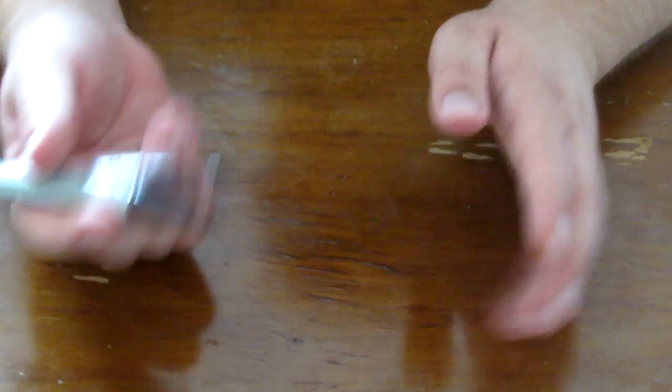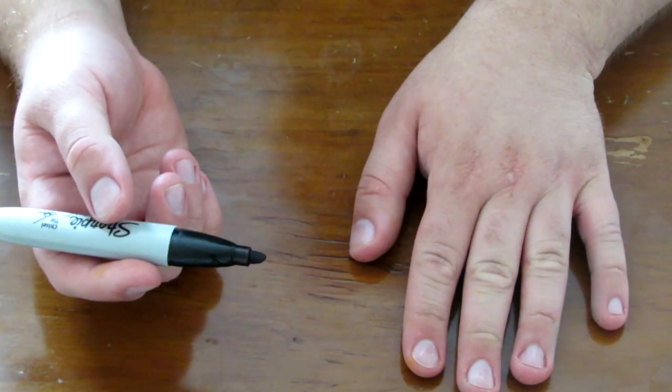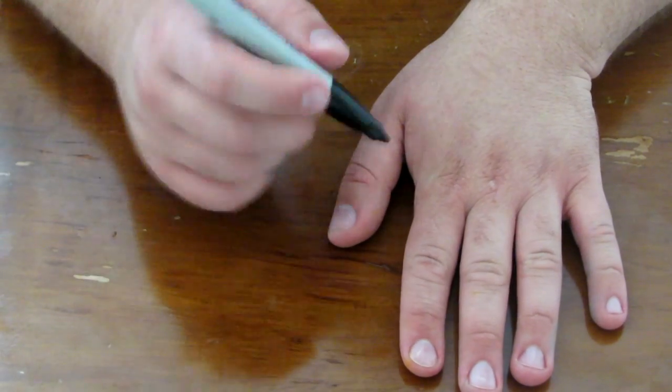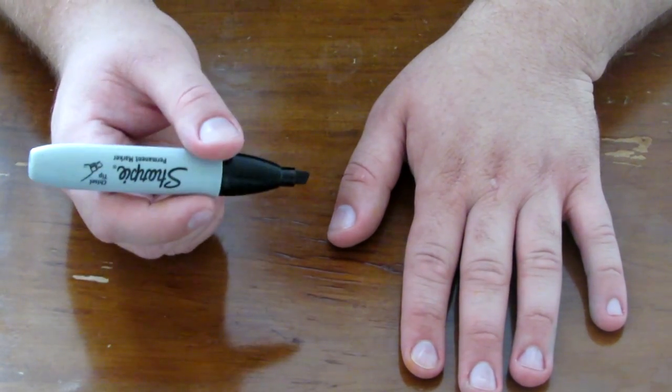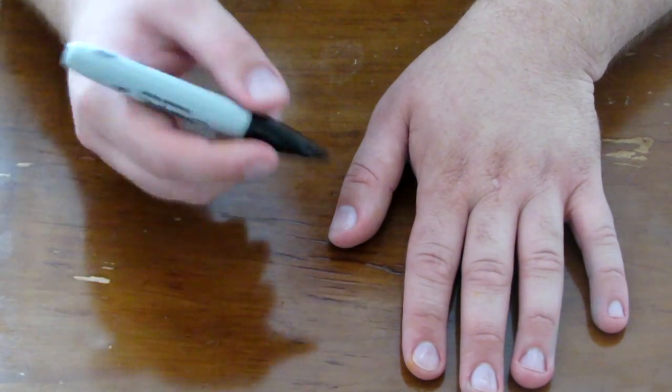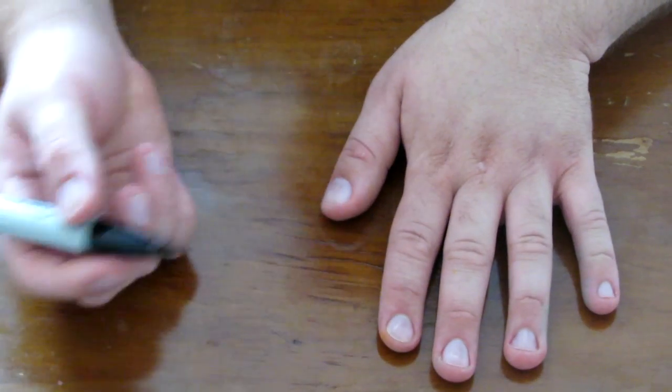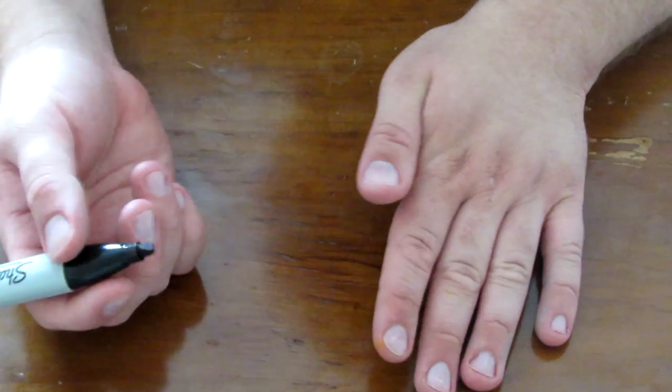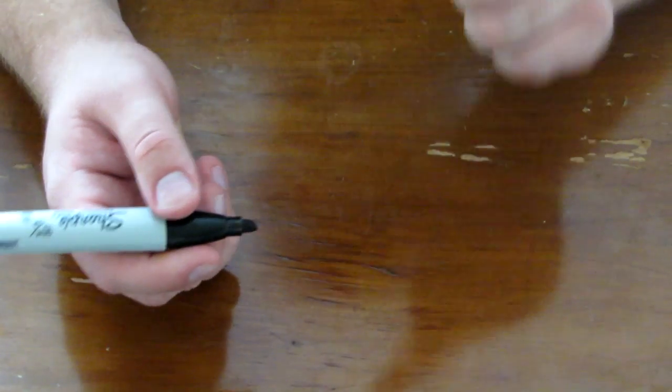Once you have your color out that you'd like to use to paint your nails, usually start with your least dominant hand to paint first so you can get that all done. Some people like to go the other way around, but for me I just like to start with my least dominant hand, so I'm going to start with my left hand here.